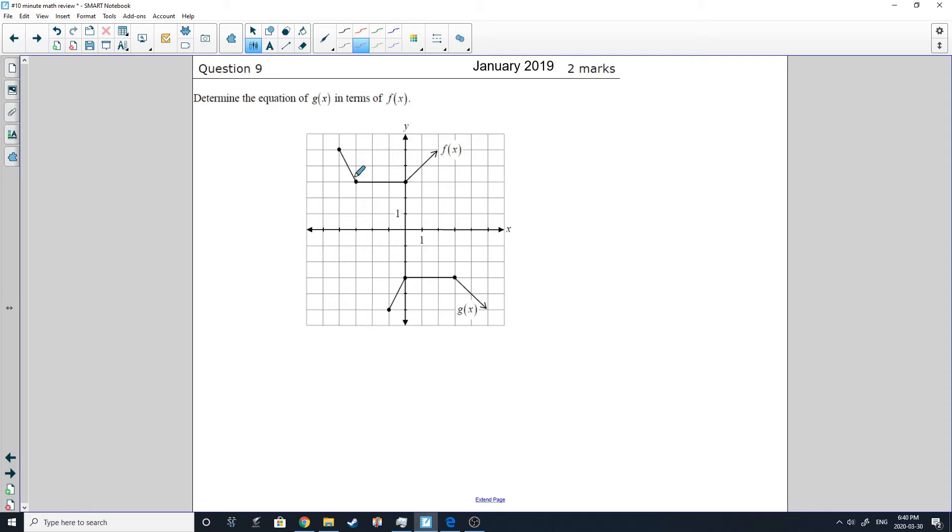Question 9 from January 2019. Now we are getting trickier. So determine the equation of G of X in terms of F of X. So we are taking the equation of G of X in terms of F of X. And we are turning it into G of X. So what happens to F of X here to get G of X? Well, let's see. We can write G of X equals. Well, we can see there's probably been some sort of flip over the X axis. So we've taken F of X and we've multiplied it by a negative 1. So we got negative F.